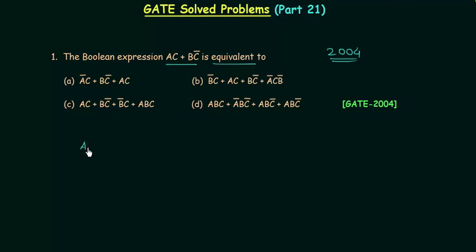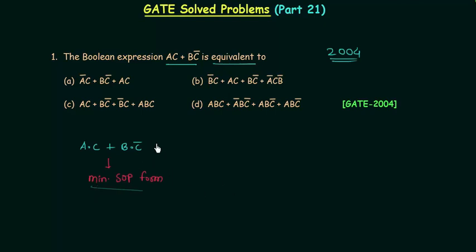The given Boolean expression is A and C or B and C complement. This expression is in minimal sum of products form, and we have to find out the canonical or standard SOP form. I will explain how we can obtain canonical or standard SOP form from minimal SOP form.